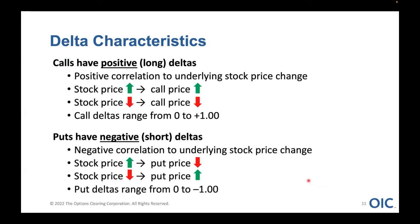Delta characteristics: calls typically have positive or long deltas, and puts have negative or short deltas. Calls have a positive correlation to the underlying stock price — if the stock price goes up, the call price should go up, and as the stock price goes down, the call price should go down. Call deltas range anywhere from zero to plus one. Puts are just the opposite — they have negative or short deltas, a negative correlation to the underlying stock price. Put deltas range anywhere from zero to negative one.